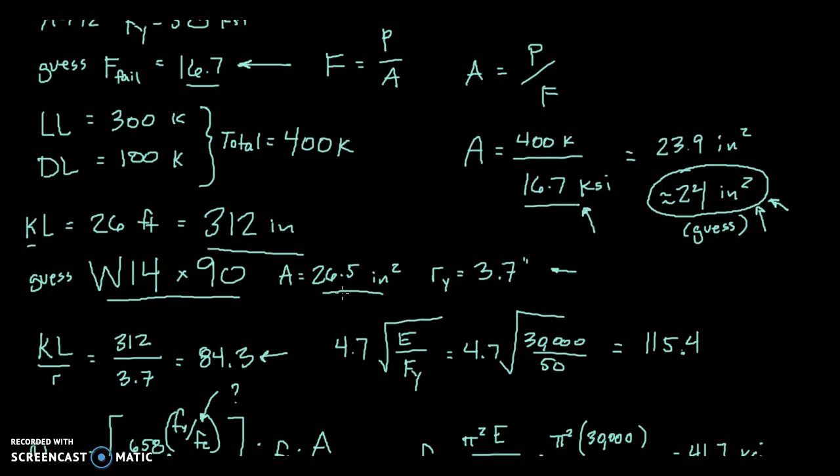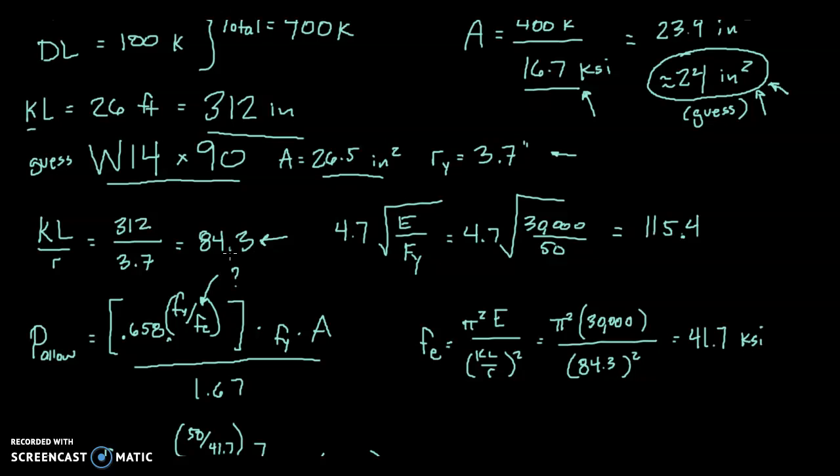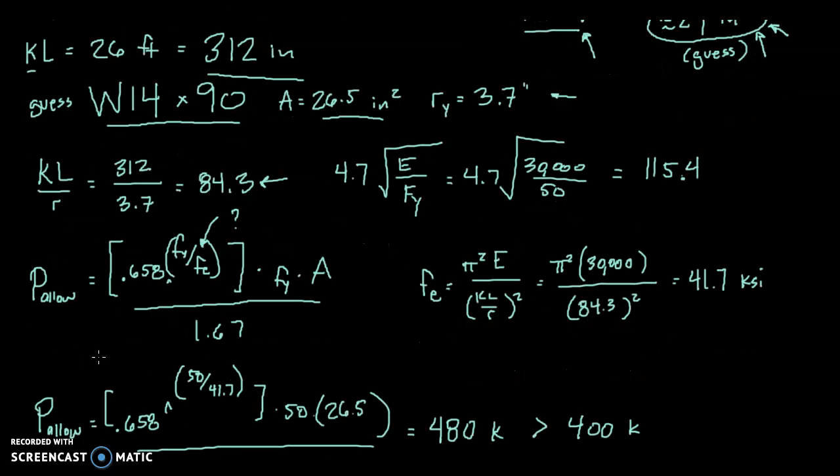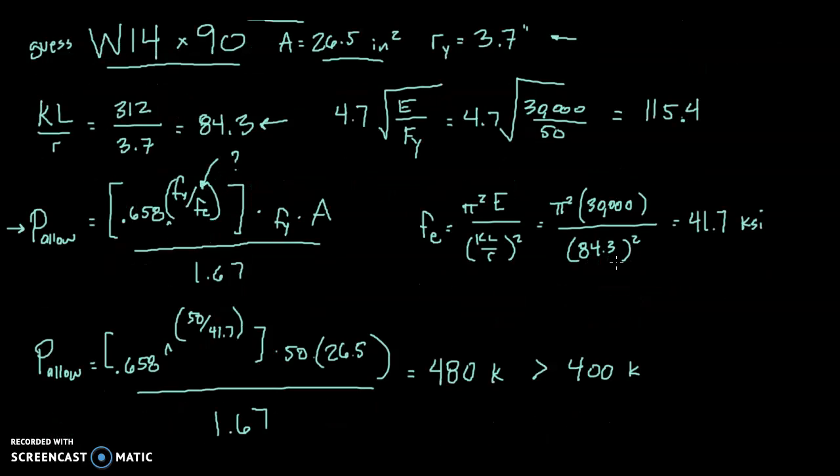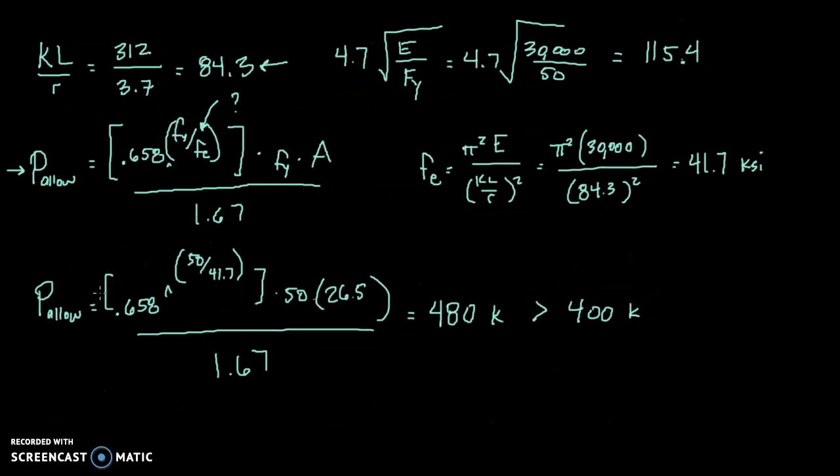After choosing a column with an area of 26.5 and radius of gyration of 3.7, we determined that because of its slenderness, this is the equation we needed to use. We have two equations for allowable load. We found the Euler stress, plugged it into this formula with our other variables,